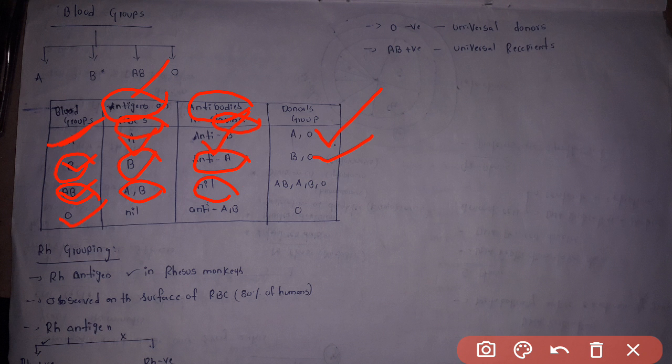In AB blood group, RBC has both A and B antigens, so the antibodies are absent. In O blood group, RBC has no antigens, so both A and B antibodies are present in plasma. This antigen and antibody relationship is very important.